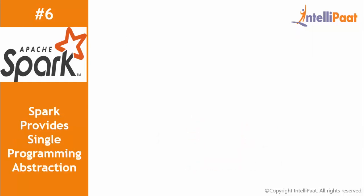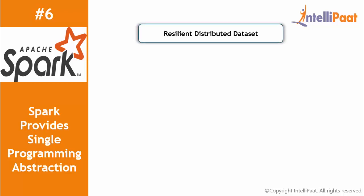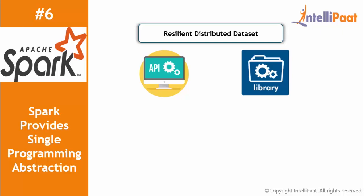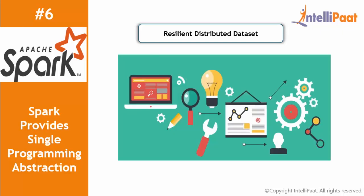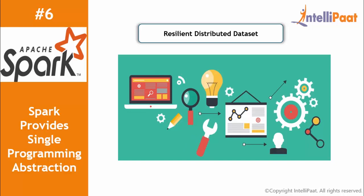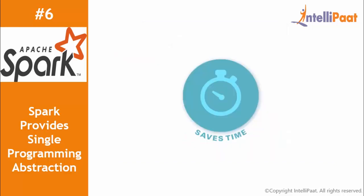Another quality of Spark is that it provides a single programming abstraction called resilient distributed datasets, or RDD. This abstraction is understood by both the APIs and the libraries of Spark. In the case of RDD, the data is not reformatted — rather, the stream data is a series of RDDs which can be repurposed for batch processing. This saves a lot of effort and time in converting data from one abstraction to another.